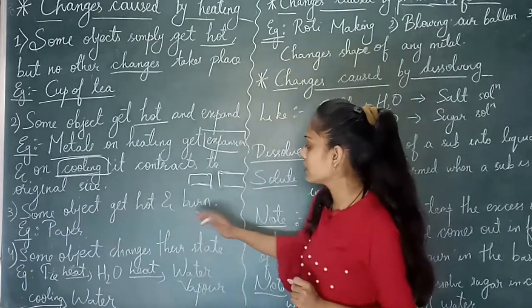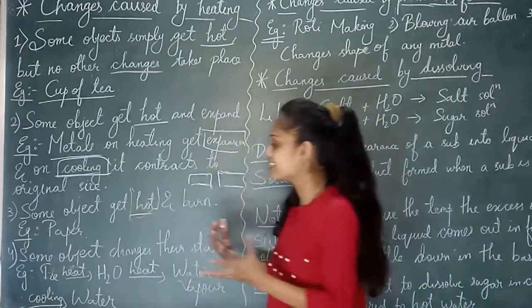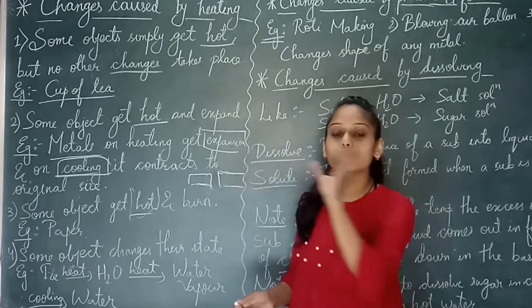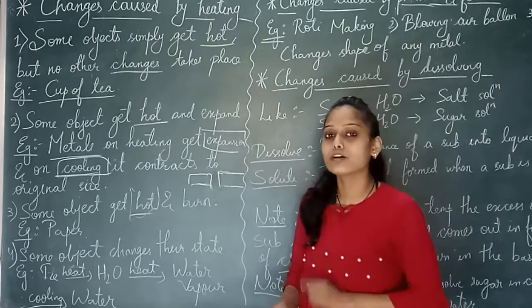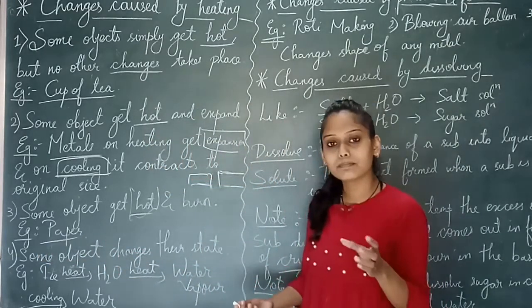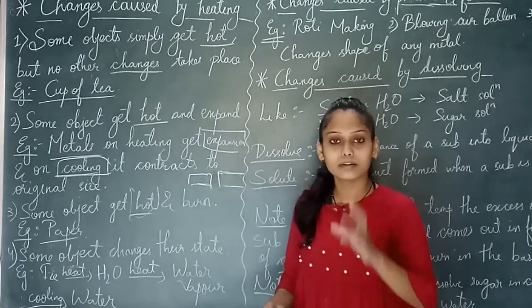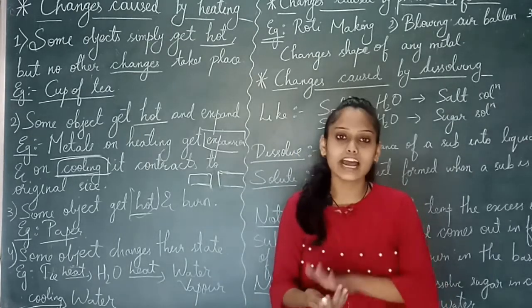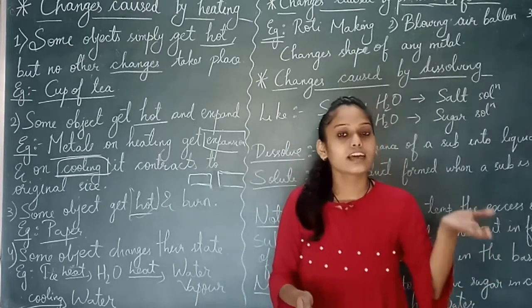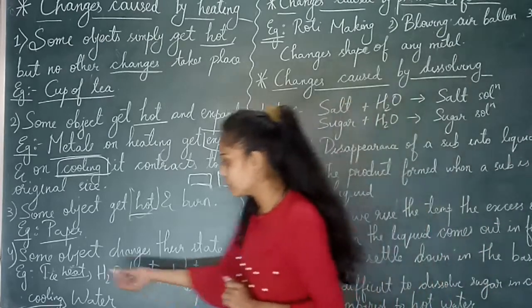Some objects get hot and burn. If we heat some objects, they convert into ash form, and it is impossible to bring them back to their original state. For example, if paper is burned, it burns out into ashes. If you want to convert ashes back into paper form, it will not happen — it is an irreversible change.